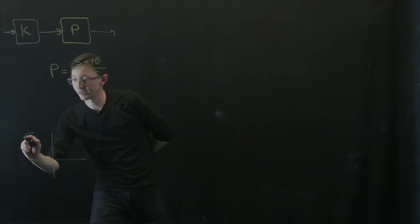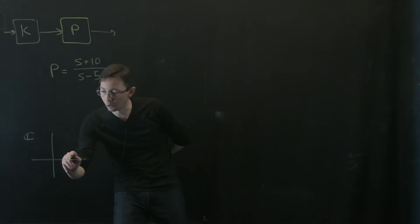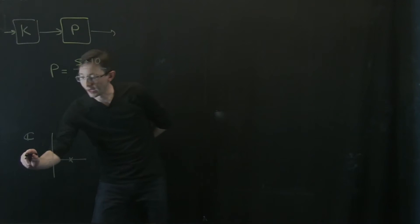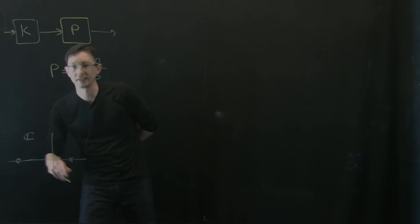And so if I draw this in the complex plane, I have a pole at S equals plus 5 and I have a zero way out here at S equals minus 10.